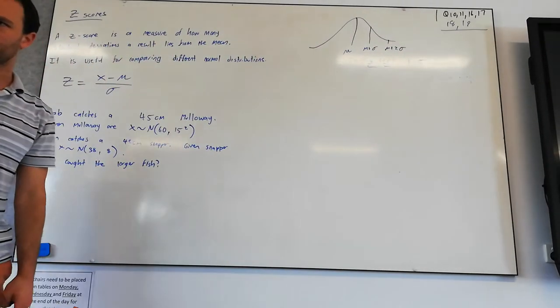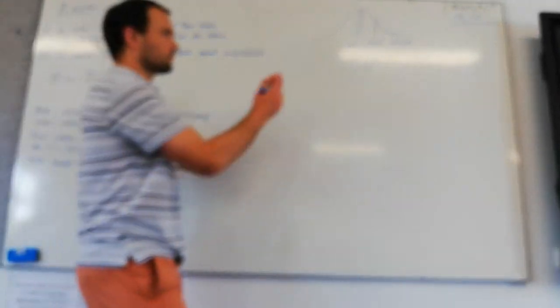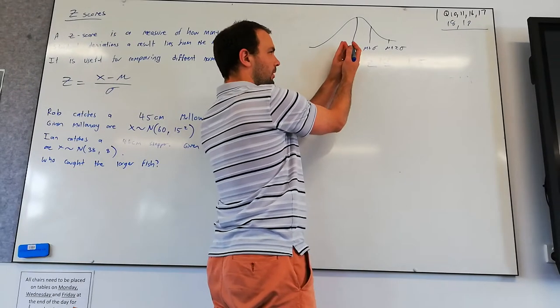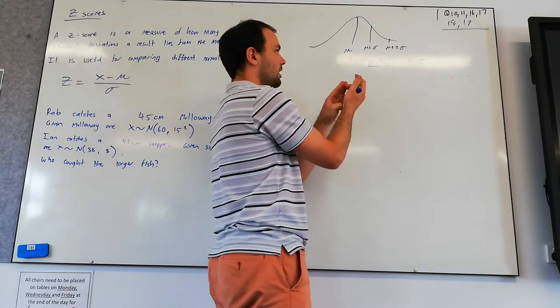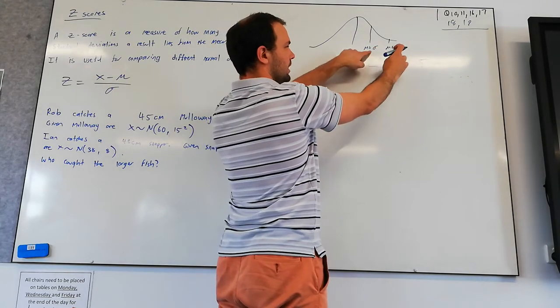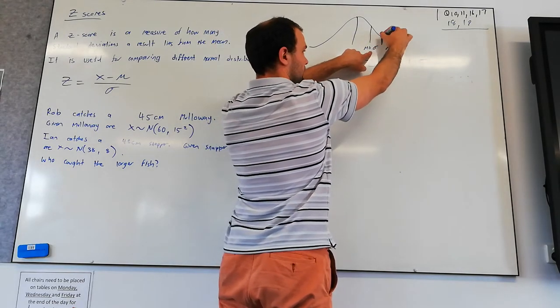A z-score of 1.5 means your result is 1.5 standard deviations above the mean. So here's one standard deviation, here's two standard deviations, so your result would be here.